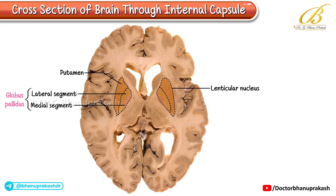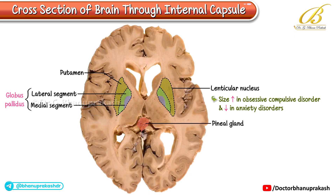The size of the lentiform nucleus increases in obsessive-compulsive disorder, while it decreases in anxiety disorders. Moving to the dorsal surface of the midbrain, you'll find the pineal gland situated along the midline. The pineal gland plays a crucial role in secreting melatonin and regulating the body's circadian rhythm.